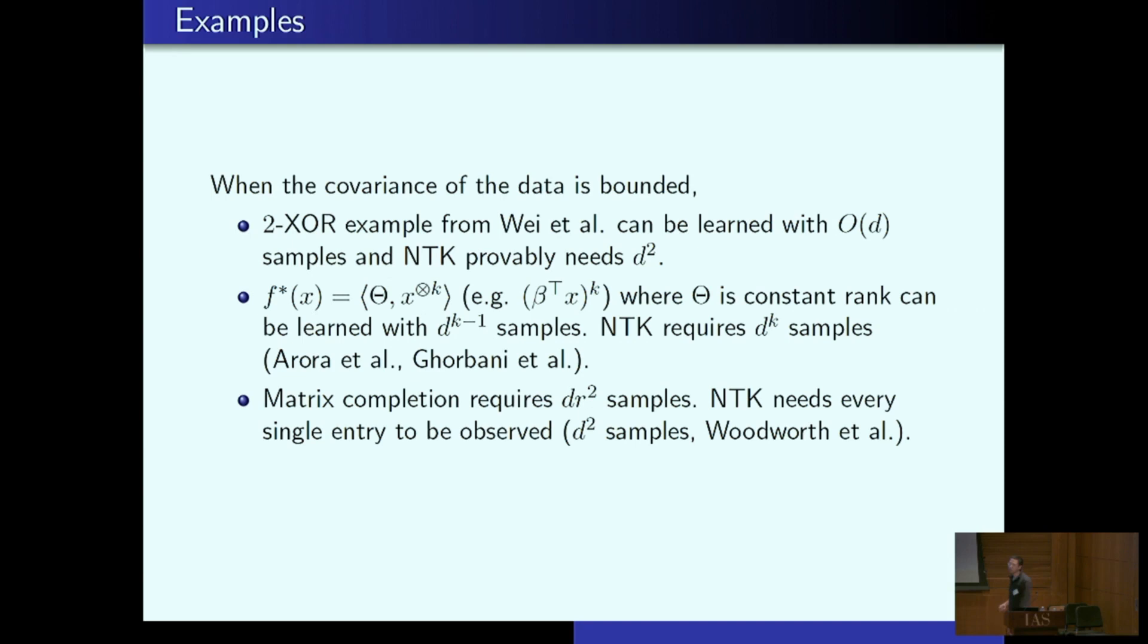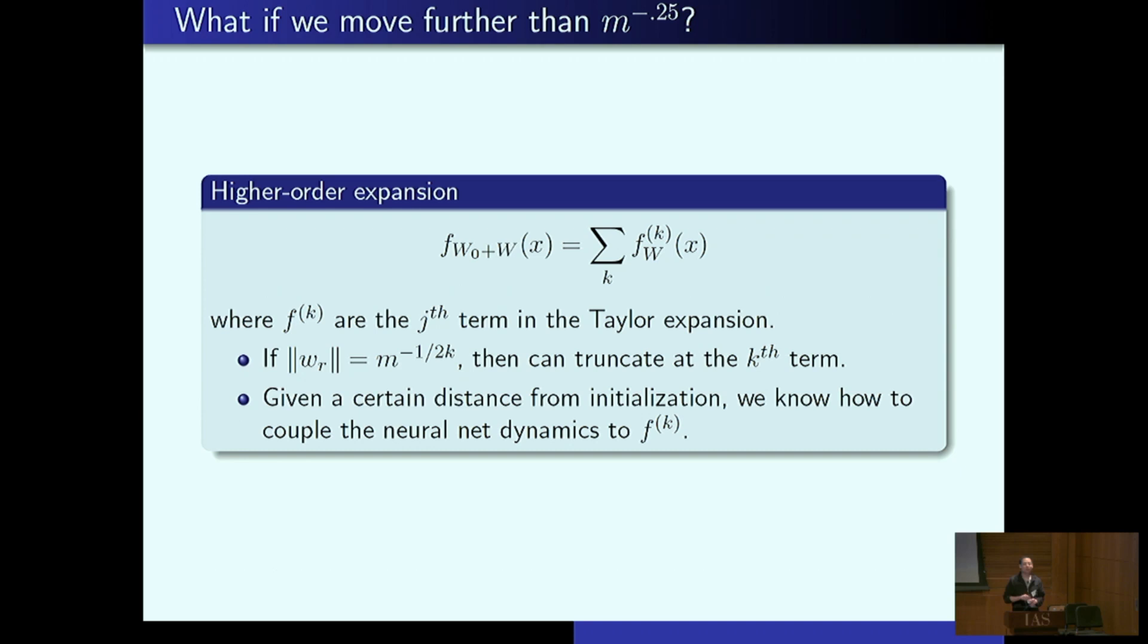Okay, so then the natural question to ask is, okay, why stop at second order? What happens if we try to utilize more of the parameter space? So of course we can do this. We just Taylor expand to even higher orders. So for each order, I have a term that's like involves w to the kth power. And then what happens is that, so if each parameter moves m to the minus 1 over 2k, then you can truncate at the kth term. For example, if I wanted to truncate at the third term, sorry, if I moved m to the minus 1 sixth, then I can truncate at the third term. If I utilize all of parameter space, then I need to keep all of these things. So given a certain distance initialization, we know how to couple the neural dynamics to this guy here up to some truncation.